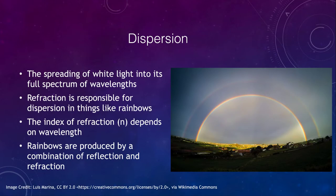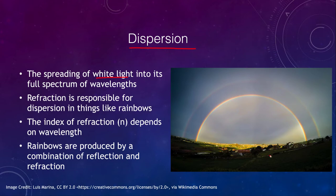The first thing before we get started is that I want to talk about what we call dispersion. Dispersion is the spreading of white light into its full spectrum of wavelengths. We're familiar with this and it is seen in rainbows, for example, as we see here — the image of the rainbow with all the colors shining in a nice arc going across the sky.